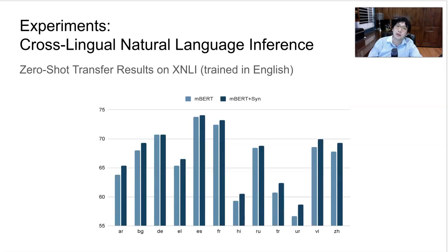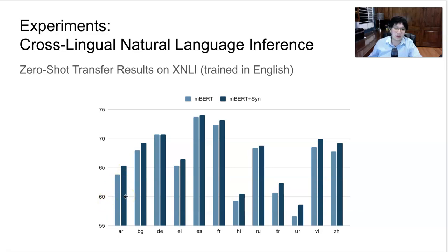First, here are the results on cross-lingual natural language inference. We consider the zero-shot transfer setting, training the model on English NLI data, then applying multilingual BERT or multilingual BERT with syntax information to 12 other languages. The light blue bar shows the multilingual BERT result, and the dark blue bar shows the syntax-augmented model. Out of 12 target languages, 10 of them show statistically significant improvement with the syntax-augmented model.